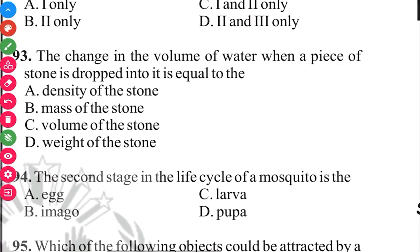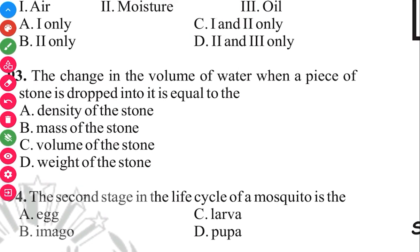Question 94. The second stage in the life cycle of a mosquito is larva. Answer in 3, 2, 1, C, larva.